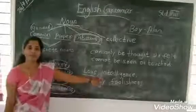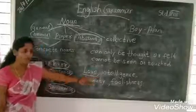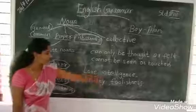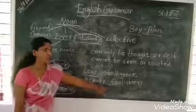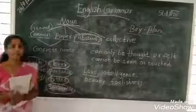These are the examples of abstract nouns: love, intelligence, beauty, relations. Okay? Is it clear?